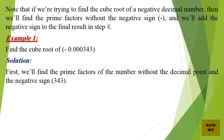Example 1: Find the cube root of minus 0.0000343. Solution: First, we'll find the prime factors of the number without the decimal point and the negative sign.